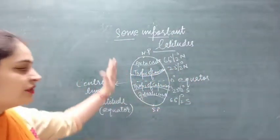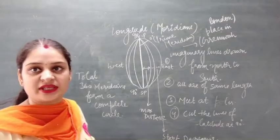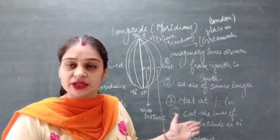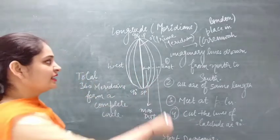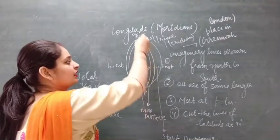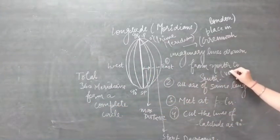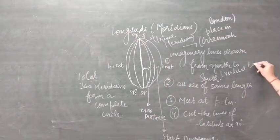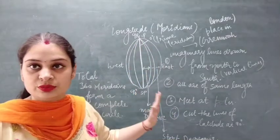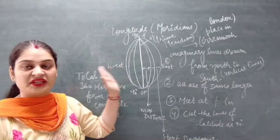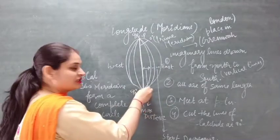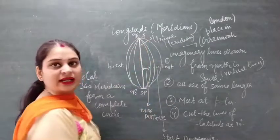Now our next topic is longitudes. The other name for longitudes is meridians. Longitudes are also imaginary lines, but these lines are drawn from the North Pole to the South Pole — that is, vertically from north to south. All meridians are of the same length, and they all meet at the poles — one at the South Pole and one at the North Pole.